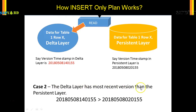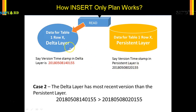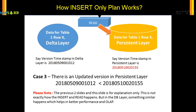In Case 2, the Delta layer has a more recent version than the persistent layer. The persistent layer has a timestamp of 8th of May at 2:14 p.m., while the Delta layer has 2 a.m. in the morning — so the Delta layer has the most recent timestamp, and the read will happen from the Delta layer.